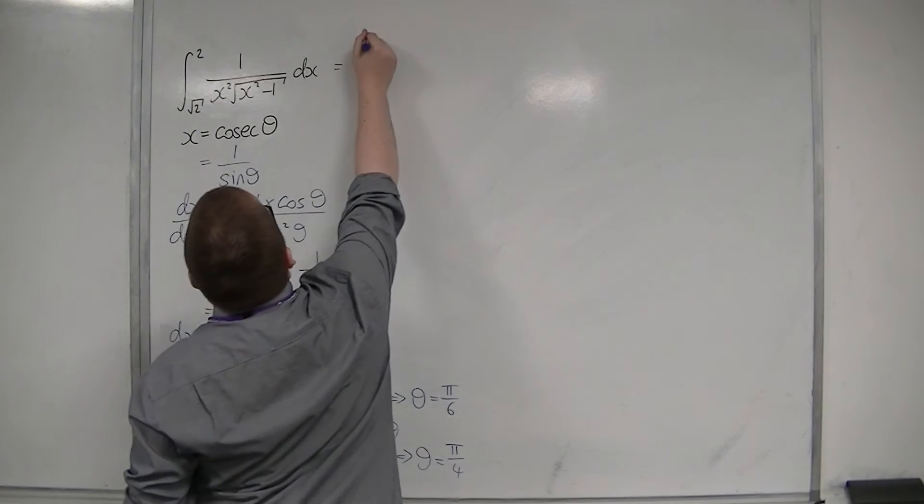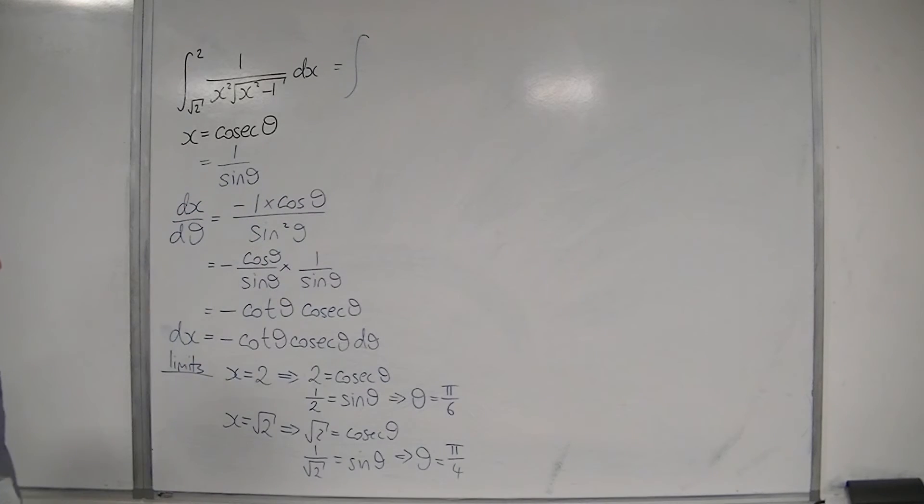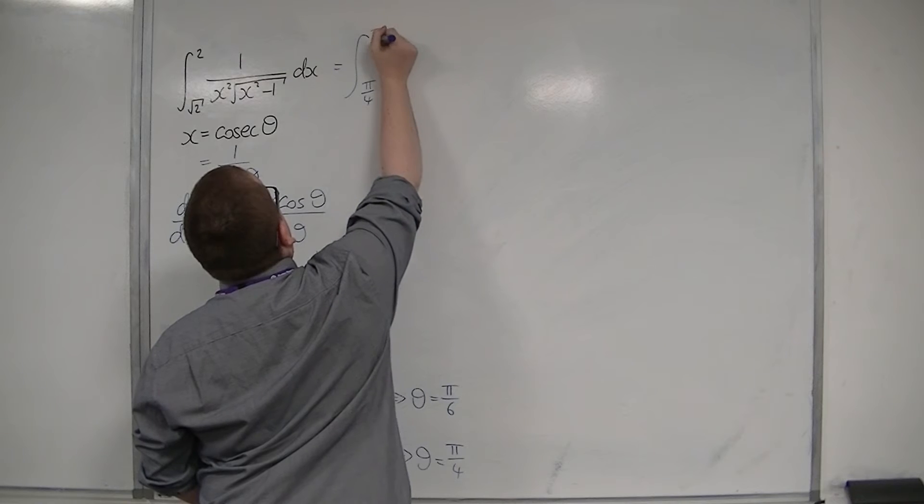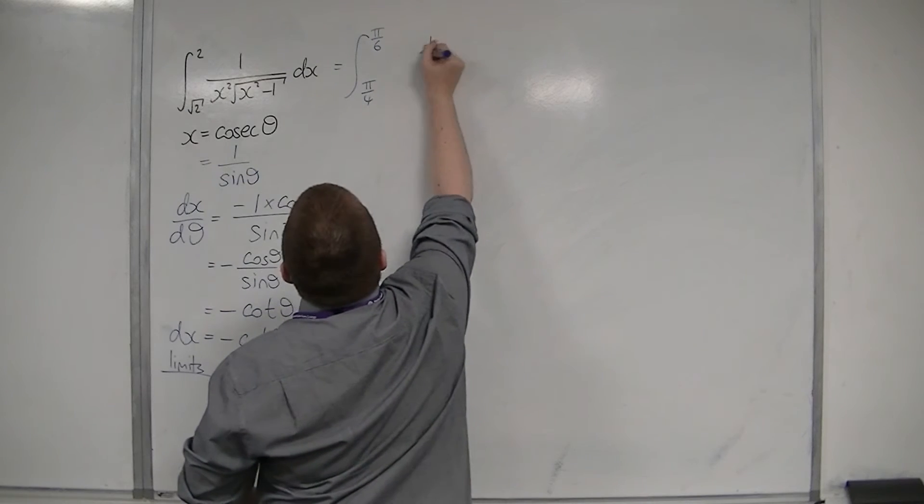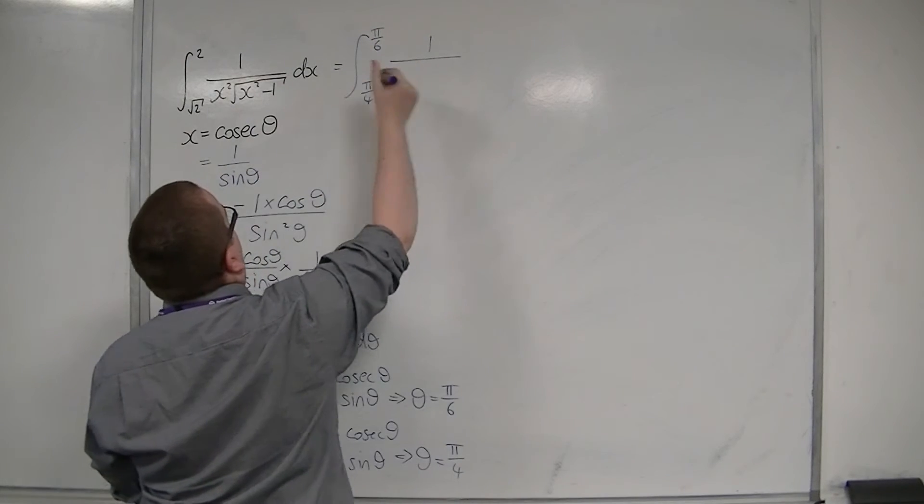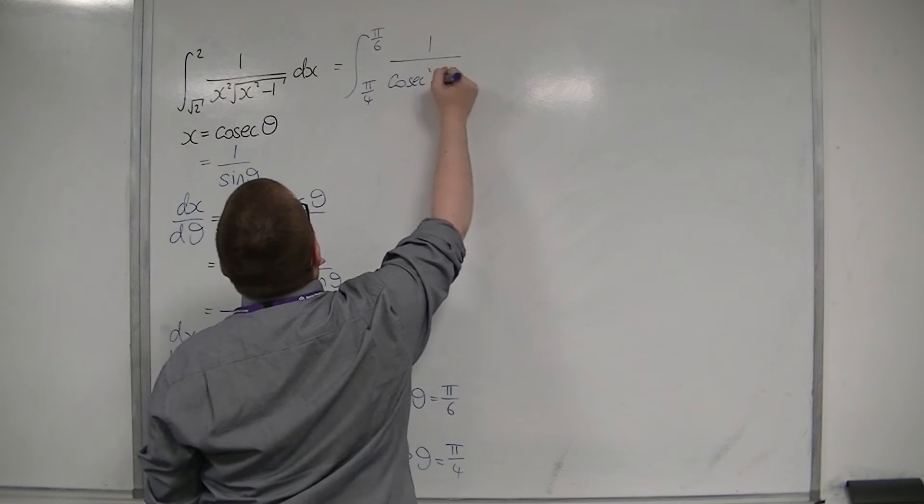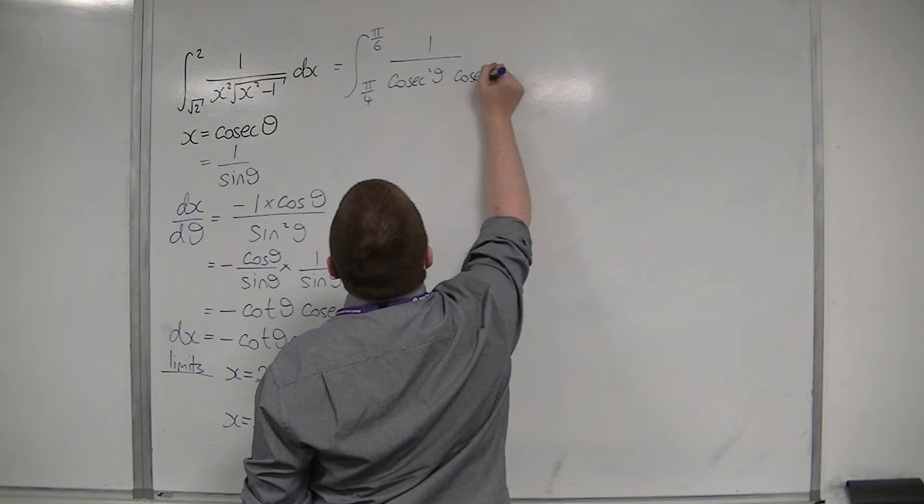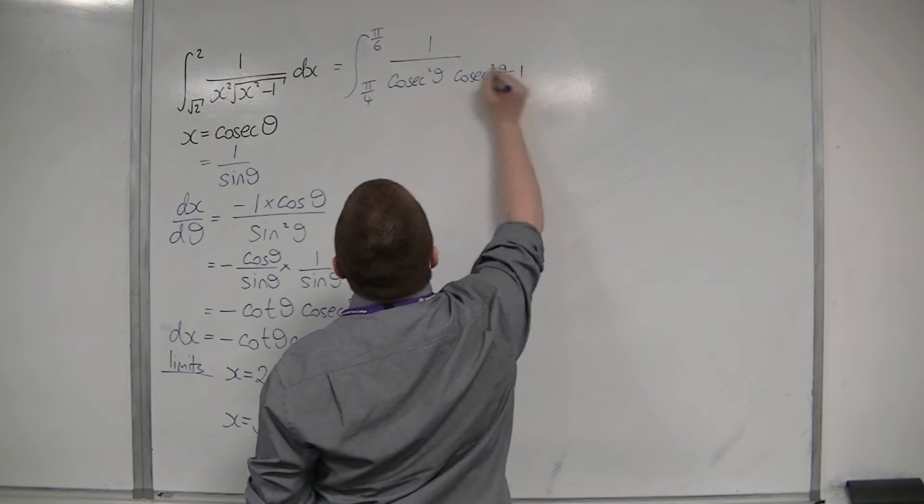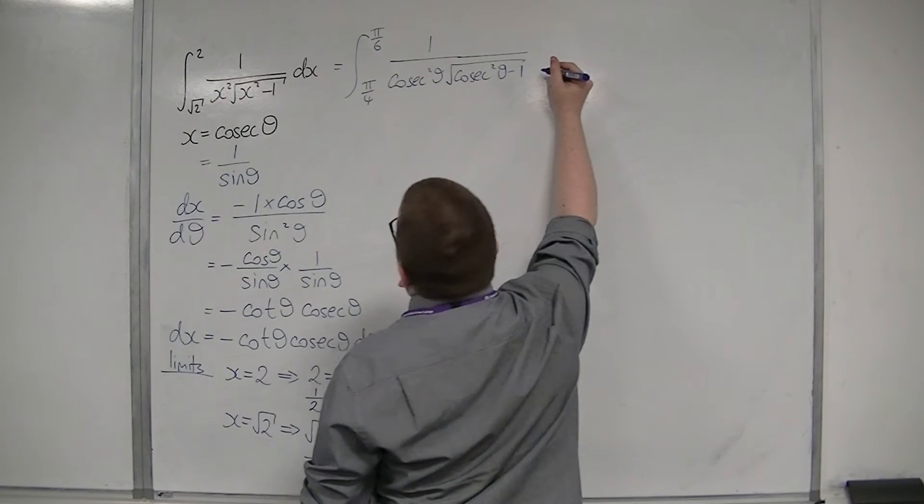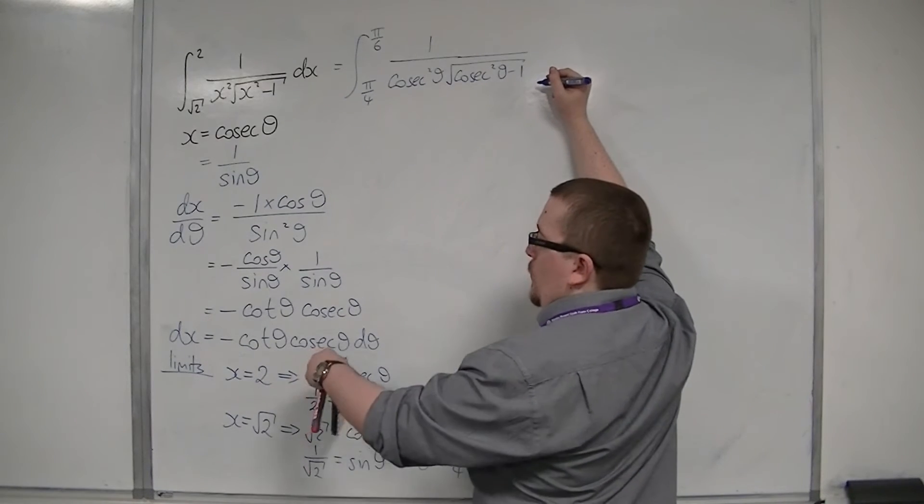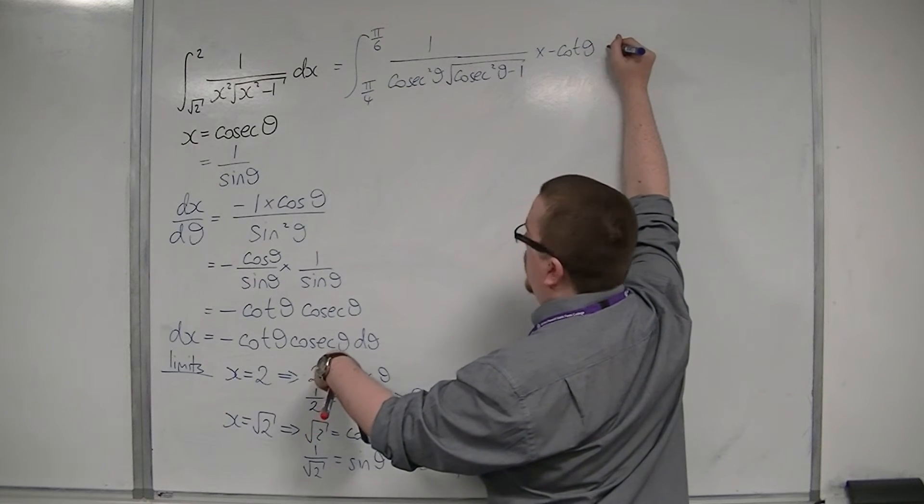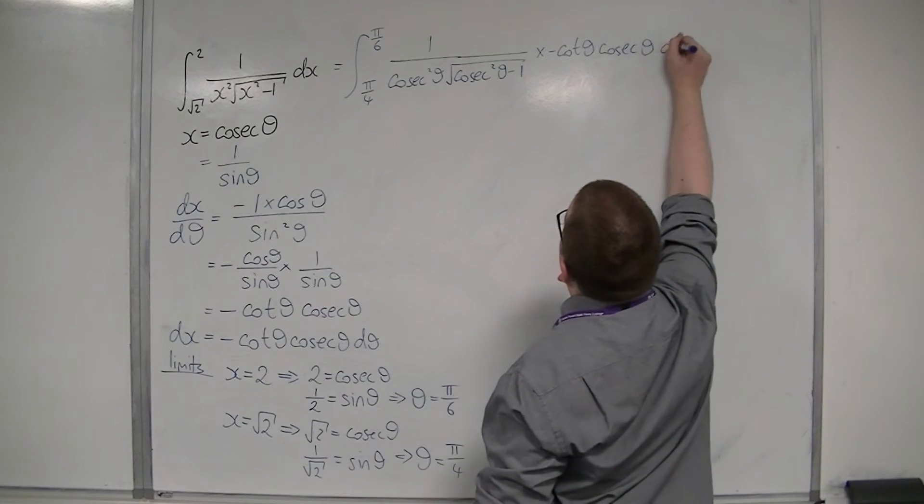So this is the integral between pi over 4 and pi over 6 of 1 over x squared, so cosec squared theta. We've also got x squared minus 1 inside a square root, so cosec squared theta minus 1 square rooted. And we've replaced dx with minus cot theta cosec theta d theta.